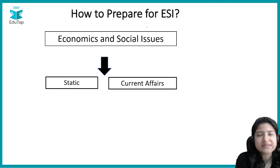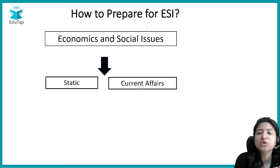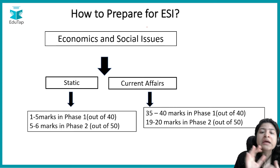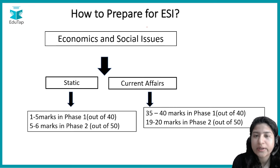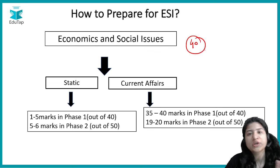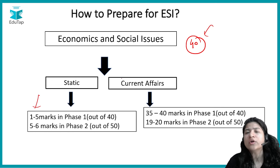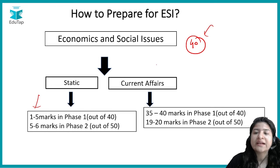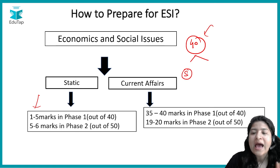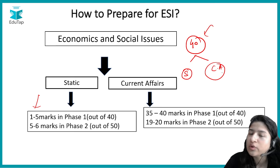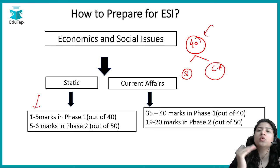The value we're adding is by segregating the portion into how many questions are asked from static versus current affairs. For the ESI section in Phase 1, current affairs holds much more weightage. There are 40 questions asked in the ESI section. In many shifts, all 40 questions have been from current affairs only. On average, around 1 to 5 questions can be from static, and the remaining 35 to 39 questions will be from current affairs.